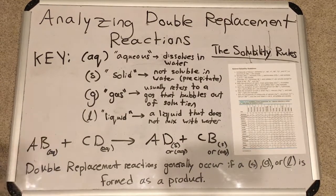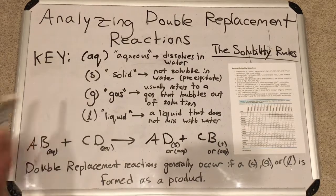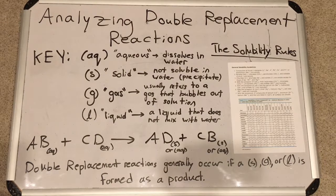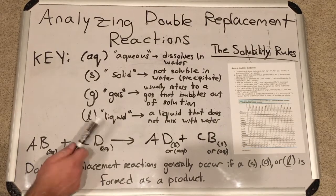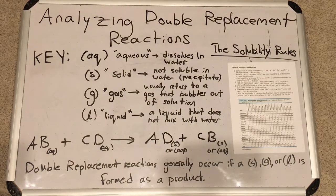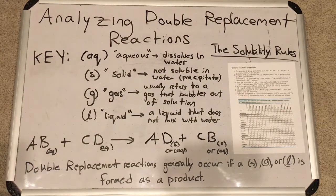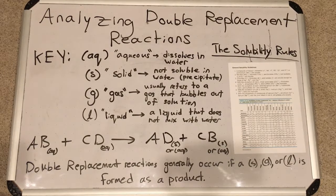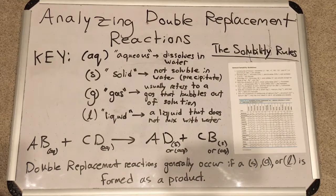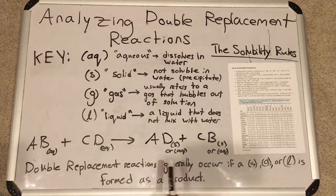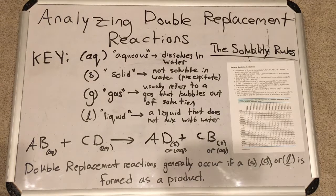G is reserved for gas. So if one of your products happens to be a gas, it will literally bubble out of the solution — it's not soluble in water and will create bubbles, like hydrogen gas for example. L stands for liquid, so if we have two liquids that do not mix, a liquid that doesn't mix with water will separate out of solution, such as oil. We're not going to deal specifically with G or L as much as we are with S. A double replacement reaction generally occurs only if there is an S, G, or L — a solid, gas, or liquid that is formed. If both products are aqueous, the reaction normally will not occur.